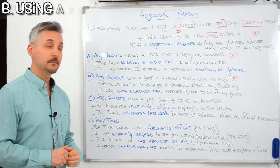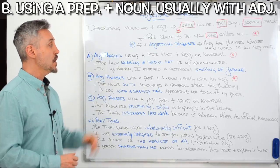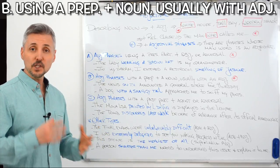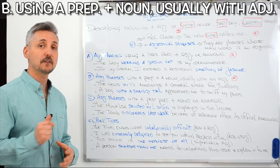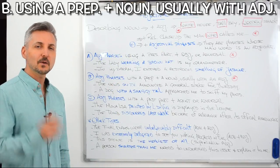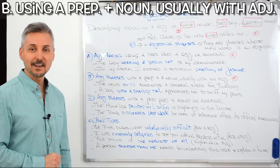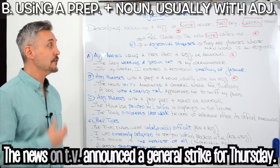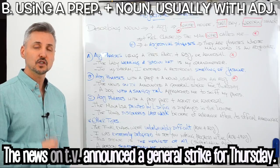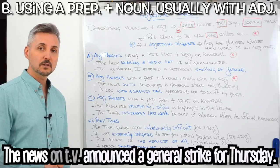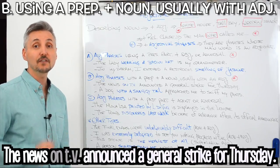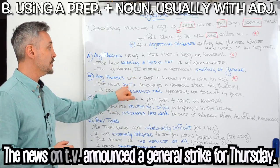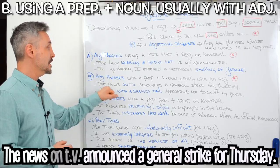Now, the second group: adjectival phrases with a preposition plus a noun. If you wish to watch a lesson on prepositional phrases, you may click here. Let's take a look at the examples. The news on TV announced a general strike for Thursday. Which news? The ones on TV — so, on TV is the prepositional phrase that describes the news.